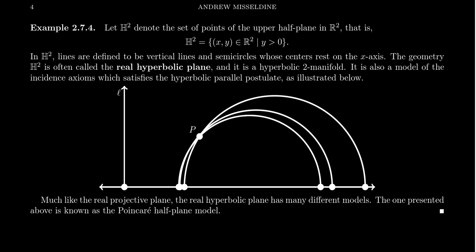It satisfies all the incidence axioms. I just told you how to determine a line between two points. Line determination is satisfied. We have three points. Every line has two points. And no line has all the points. It's an incidence geometry. And it also satisfies the hyperbolic parallel postulate.